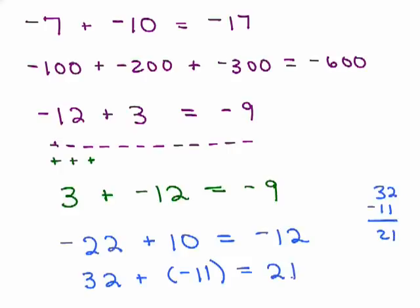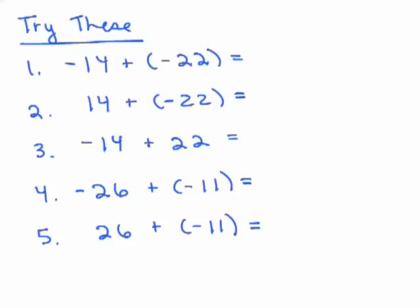Here are a few problems for you to try — put it on pause and see if you can do these. For the first one, they're all negatives, so the answer is negative, and you add 14 and 22 to get negative 36. The second one has positives and negatives; the negatives outweigh, so you take the difference: 22 minus 14 is 8, giving negative 8. For the third one, you're adding negatives and positives again, but this time more positives — so the answer is positive 8.